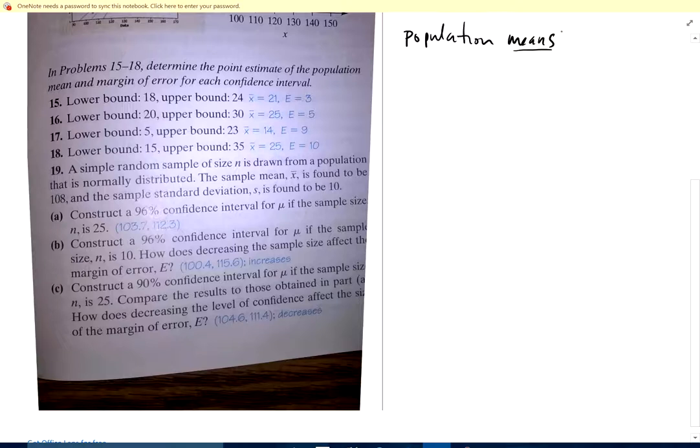Number 15 says determine the point estimate and the margin of error. Remember, confidence interval for a population mean is x bar, that's my point estimate, plus or minus t star, square root, s over square root of n, where I know what x bar is and I know what s is.